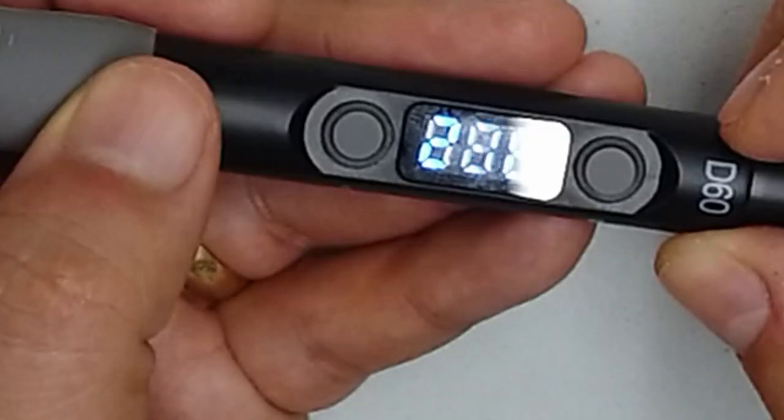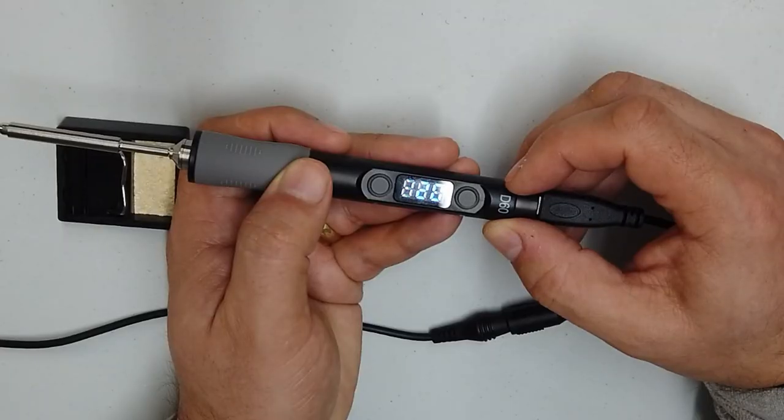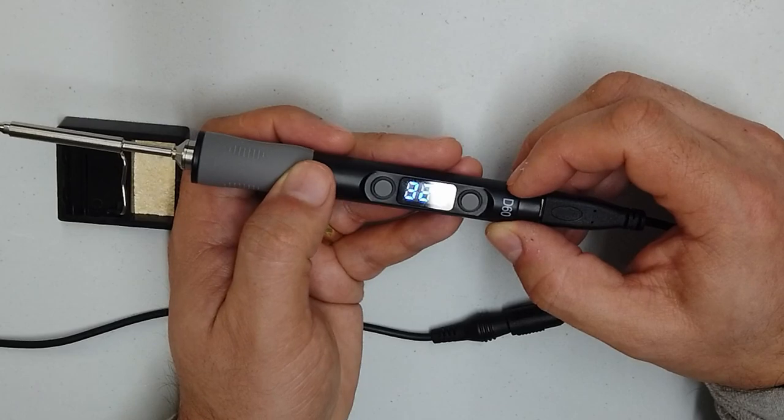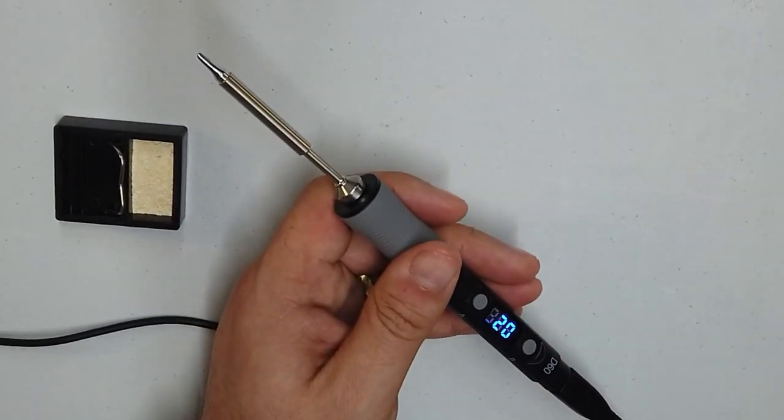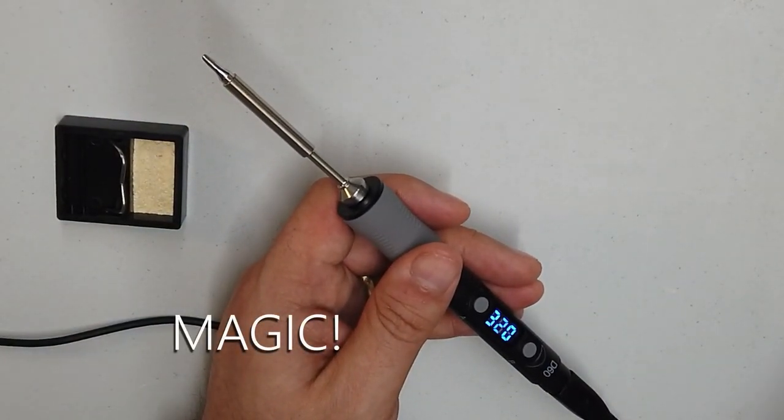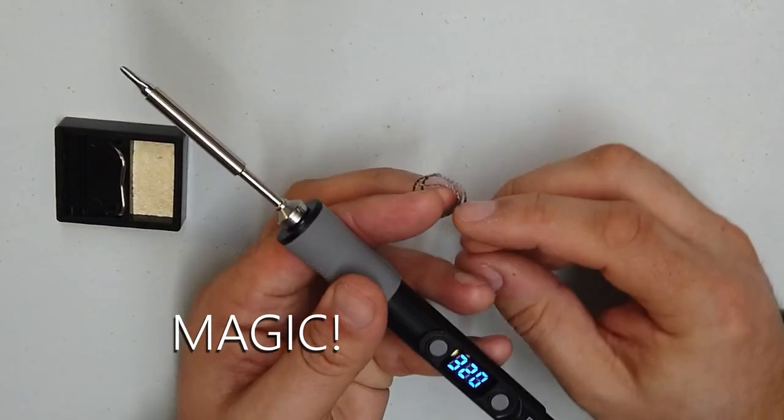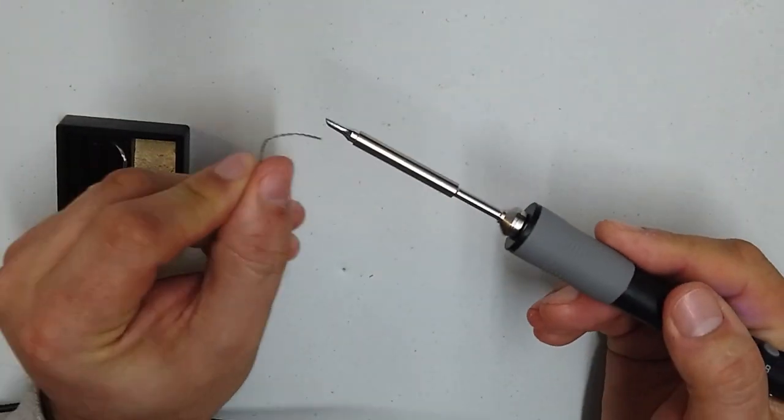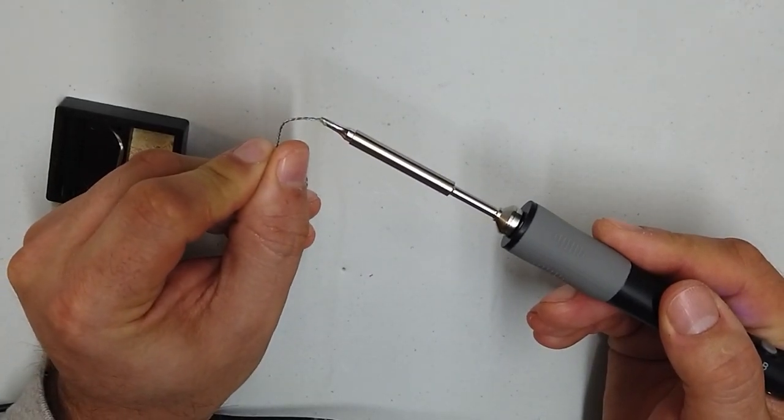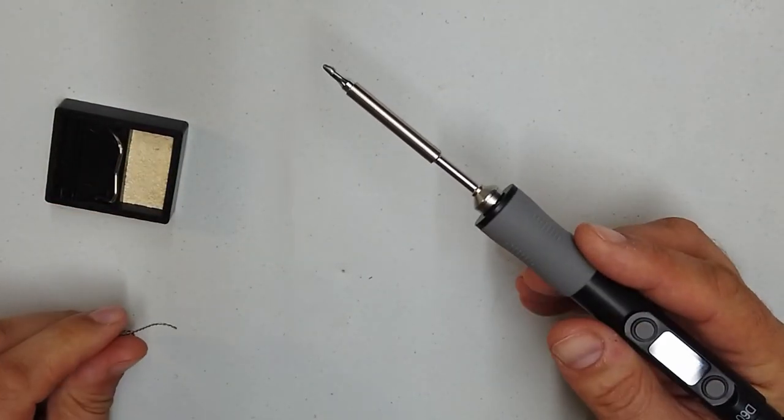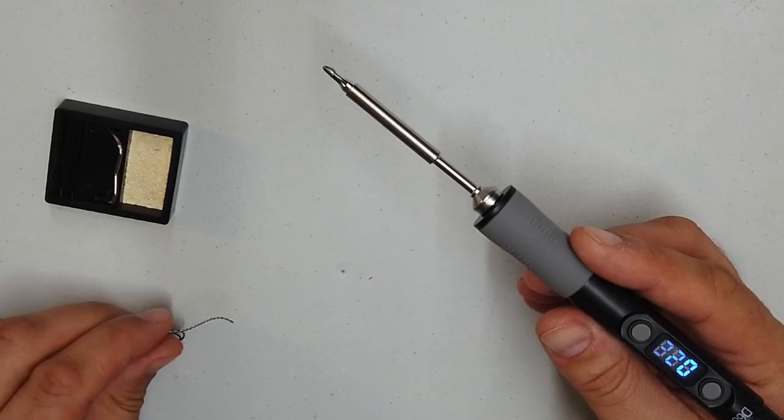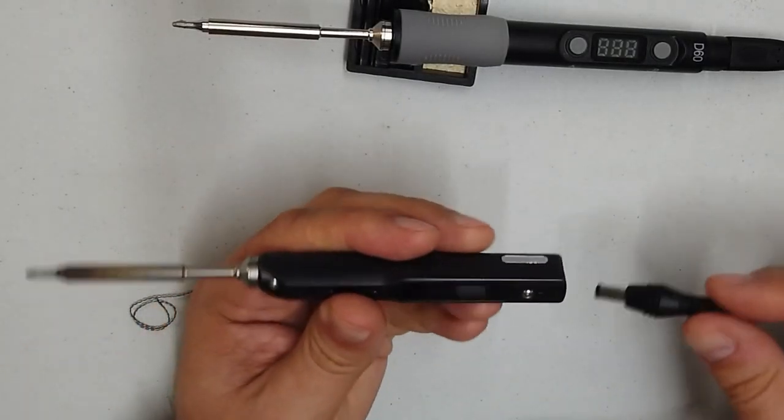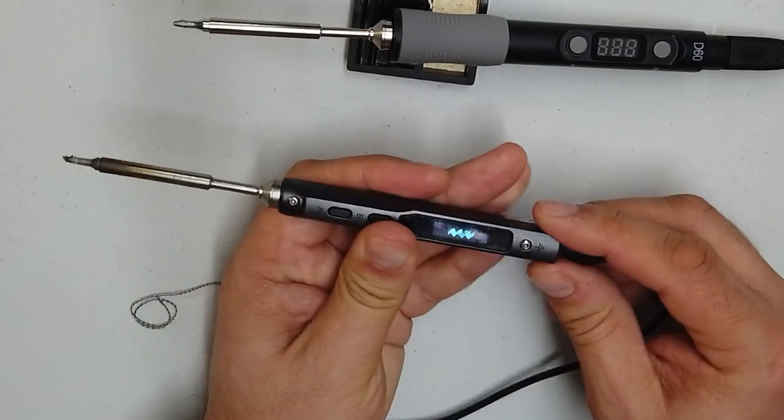100 degrees, 200 degrees, 320 degrees. That is a very impressive warm up time. Let's find a little piece of solder and melt it to confirm that is working. And indeed, that is melting solder quite happily. Let's compare that with the TS-100.